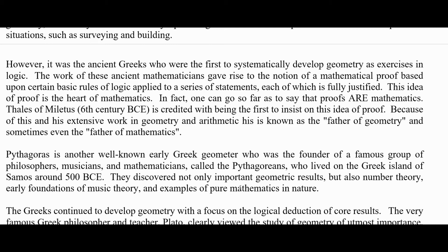Pythagoras is another well-known early Greek geometer who was the founder of a famous group of philosophers, musicians, and mathematicians called the Pythagoreans, who lived on the Greek island of Samos around 500 BCE. They discovered not only important geometric results, but also some early number theory, early foundations of music theory, and examples of pure mathematics in nature.